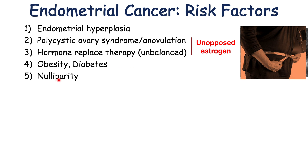Another risk factor is nulliparity — not having any children or not giving birth. The reason this is a risk factor is because you're going to have multiple menstrual cycles over the course of a lifetime, whereas if there were pregnancies, there would not be those menstrual cycles repeating. So pregnancies would reduce the total number of menstrual cycles a patient experiences.